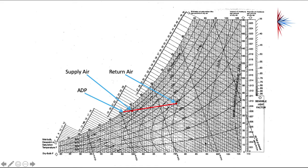We have our return air temperature here at about 77 degrees, and our supply air here at about 55.4 degrees. If you extend that line out to the scale on the left-hand side, or at the 100% humidity line, you can find the ADP by just extending that line out. That gives you the apparatus dew point — a lot easier than doing a lot of the math.